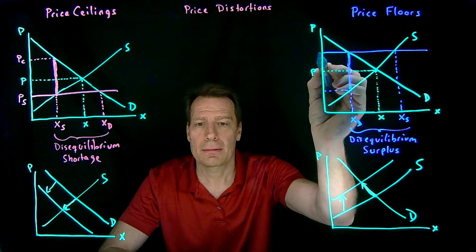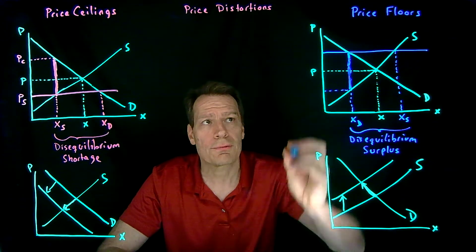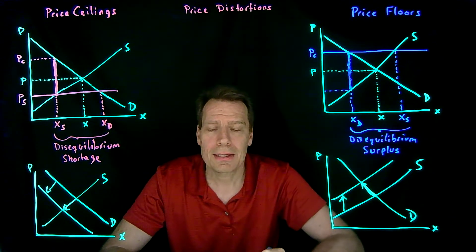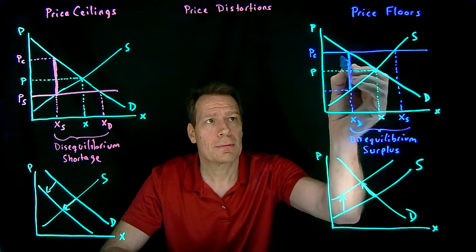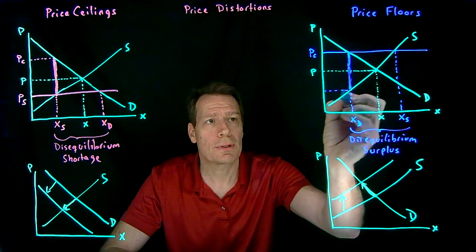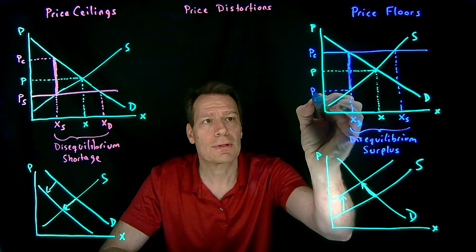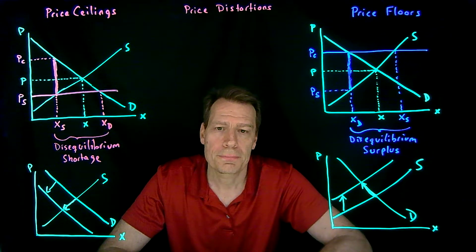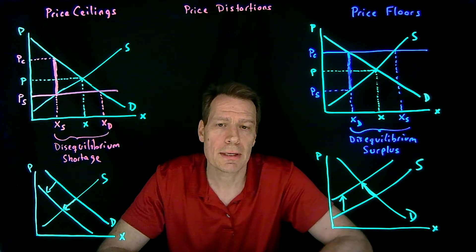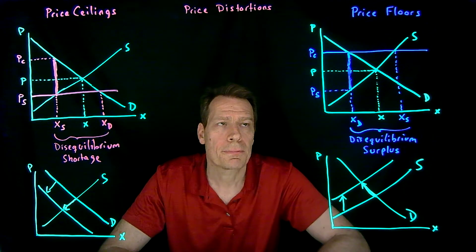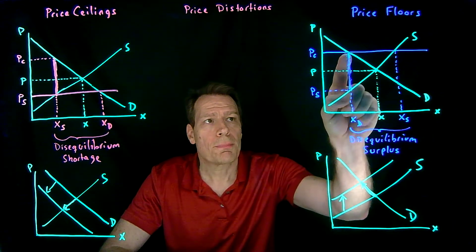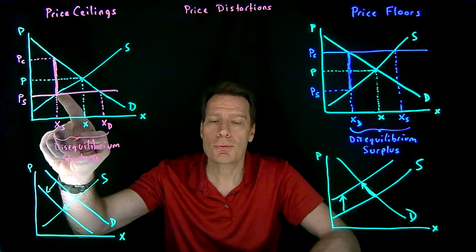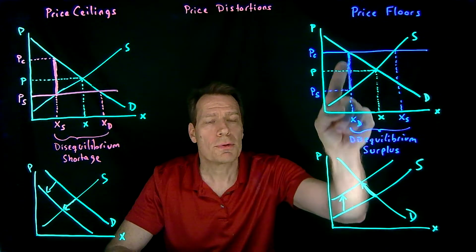The price that firms get to collect from consumers is up here, but then they have to pay for their effort cost — this vertical distance — so the price they get to keep is down here. Same result as in the price ceiling picture: this is the per unit effort cost in both cases. Here consumers paid; here firms paid.